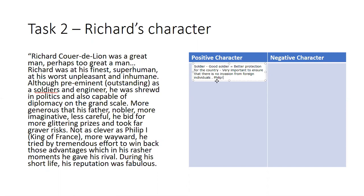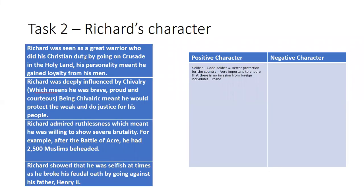So instead of just writing he's a good soldier, get used to explaining it. Now instead of just using this, you've also got this information. Richard was seen as a great warrior who did his Christian duty by going on crusade in the Holy Land. His personality meant he gained loyalty from his men. Richard was deeply influenced by chivalry, which means he was brave, proud, and courteous. Being chivalry means he would protect the weak and do justice for his people. Richard admired ruthlessness, which meant he was willing to show severe brutality. For example, after the Battle of Acre, he had 2,500 Muslims beheaded. You're going to look at that a lot more later. And Richard showed that it was selfish at times. So your job is to fill in that table and to build up.